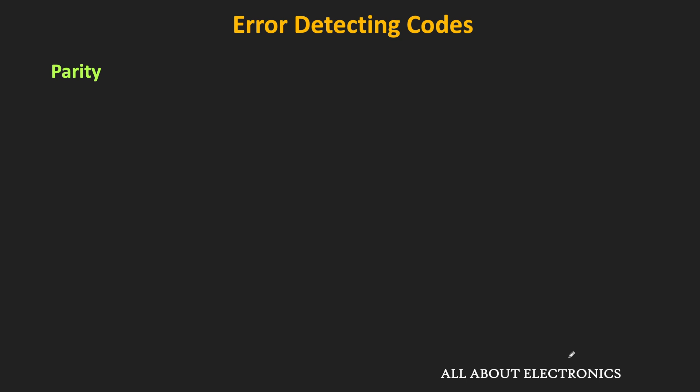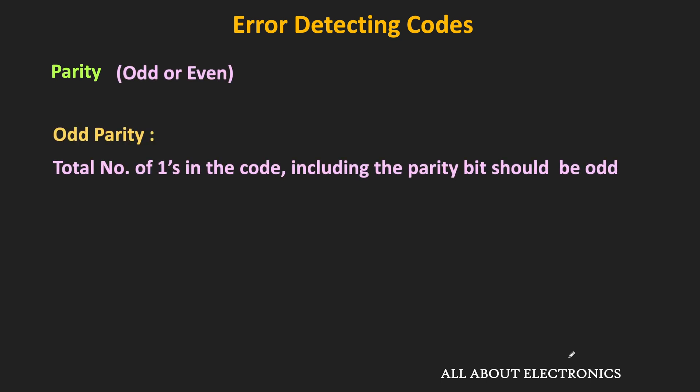This parity bit is the additional bit which is used with the data bits for error detection. We have also seen that there are two types of parity: odd parity and even parity. In case of odd parity, the total number of ones in the code including the parity bit should be equal to odd.